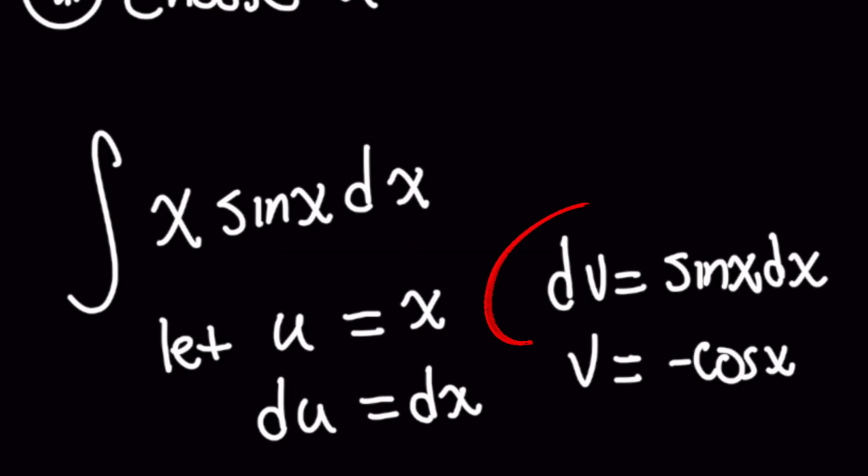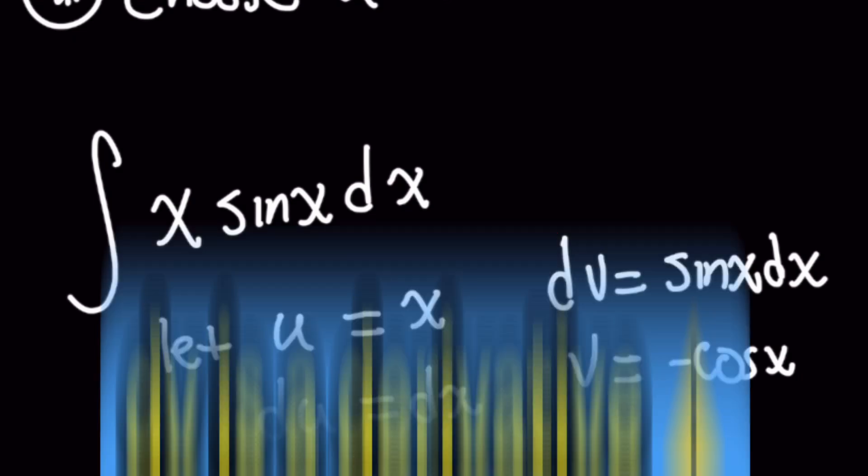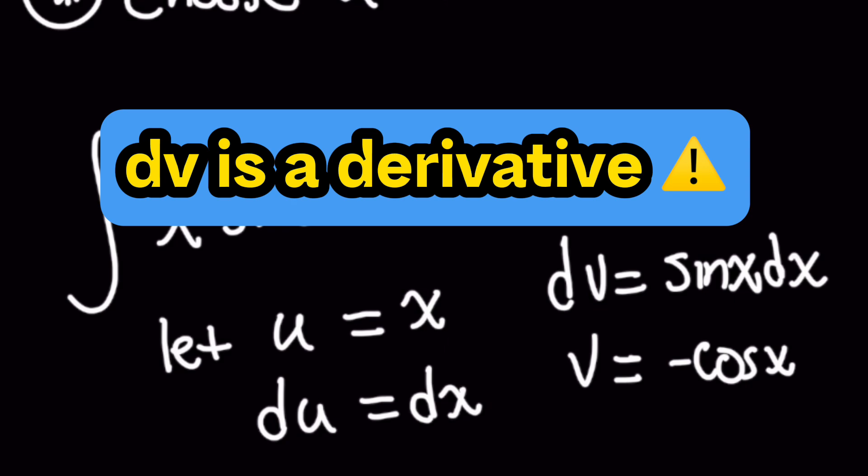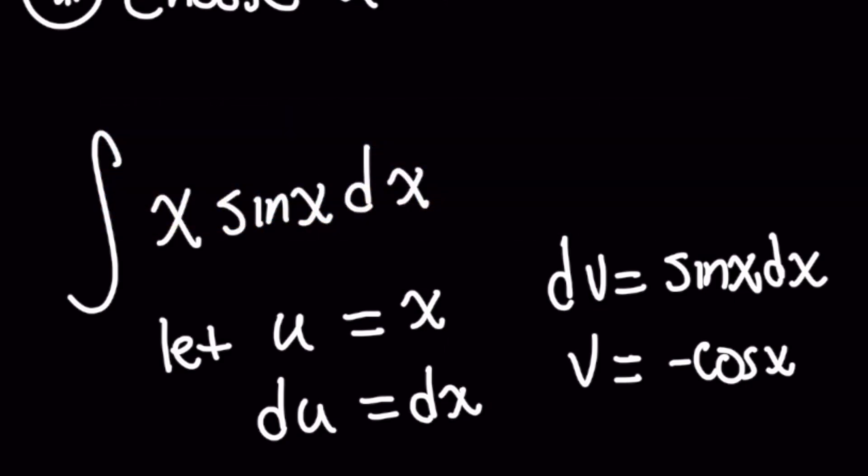Now with dv you have to remember we're not choosing v originally we're choosing dv. We have a differential so unlike the u term where you're taking the derivative of both sides you're starting with the differential here so you have to work backwards and integrate to find out what original function we have a differential for.